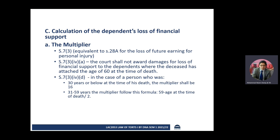Under Section 7 submission 3(FA), the court shall not award damages for loss of financial support to the dependents when the deceased has attained the age of 60 at the time of death. So there will not be any claim for loss of financial support if the deceased died at age 60 or above. For persons aged 30 years or below, the multiplier shall be 16. So if the surviving spouse used to receive, for instance, 1,000 ringgit a month, you multiply by 16 to get 16,000 ringgit.